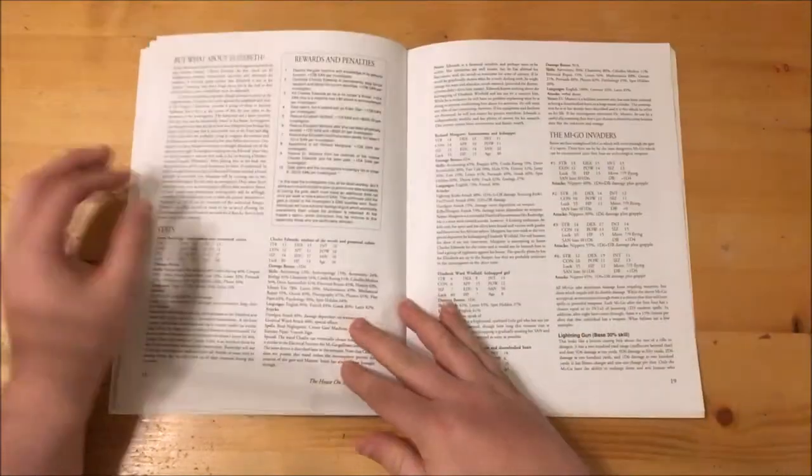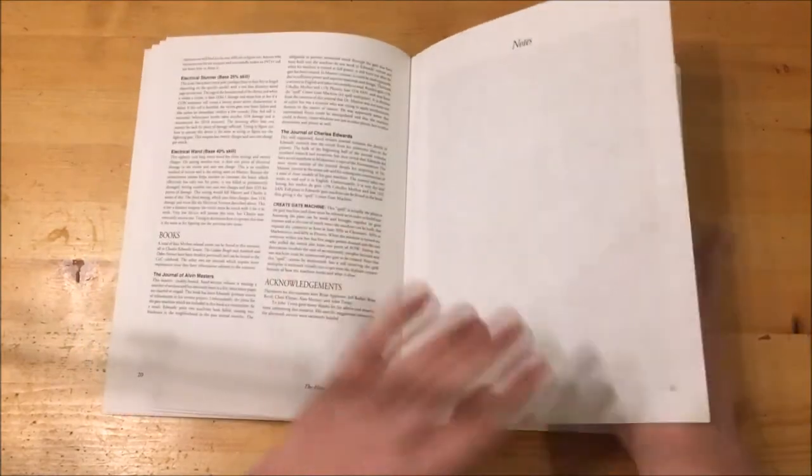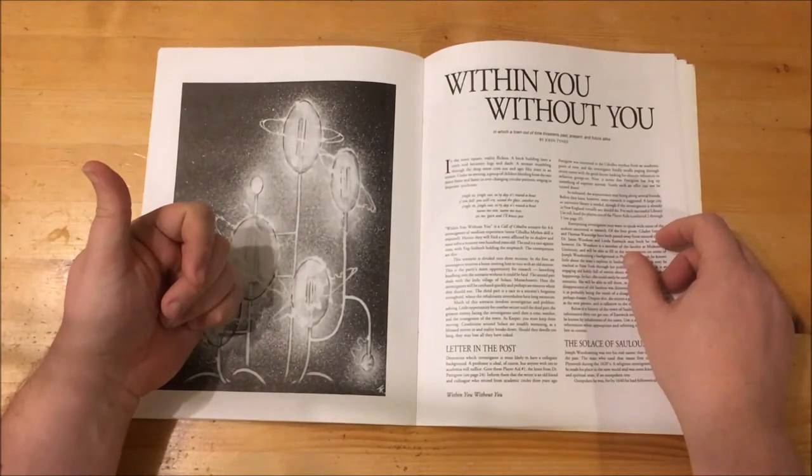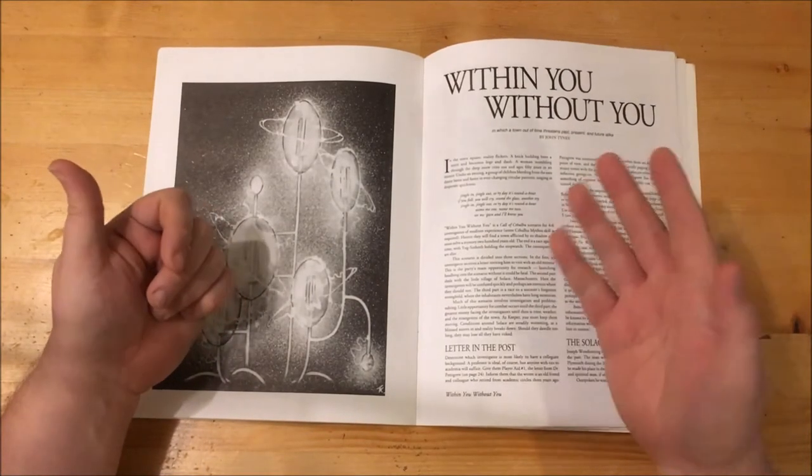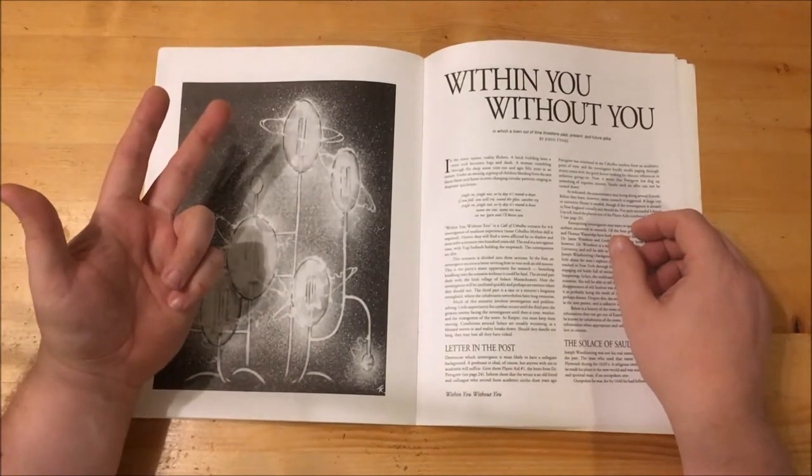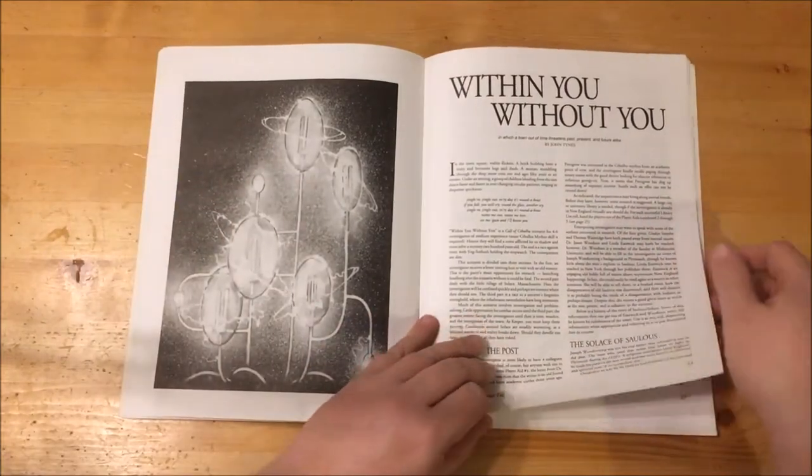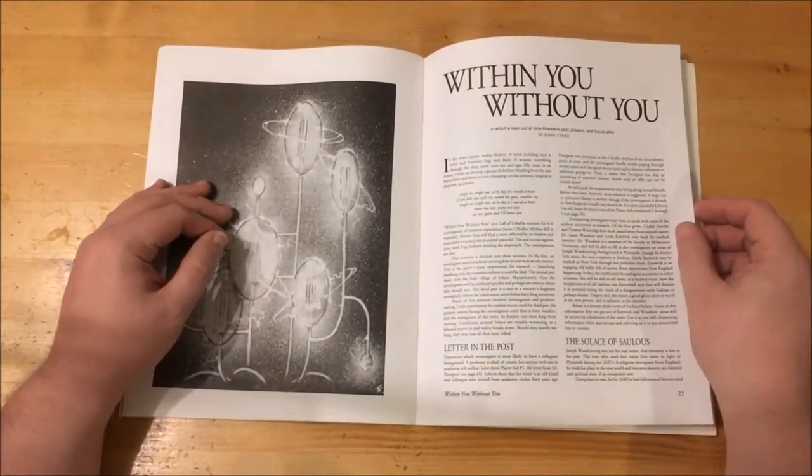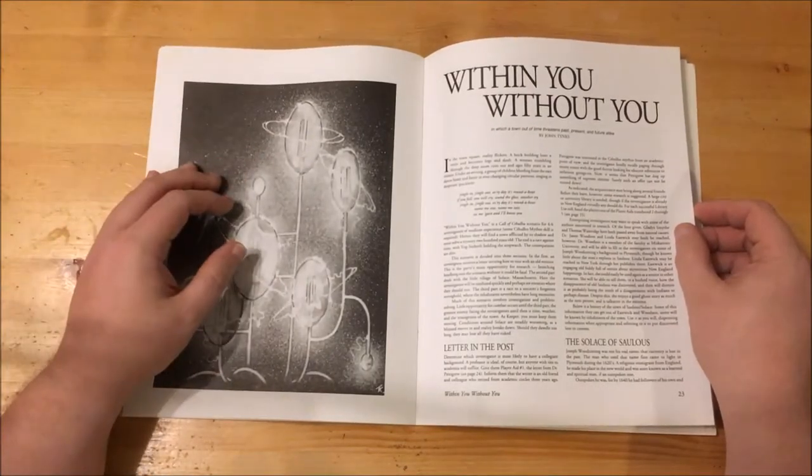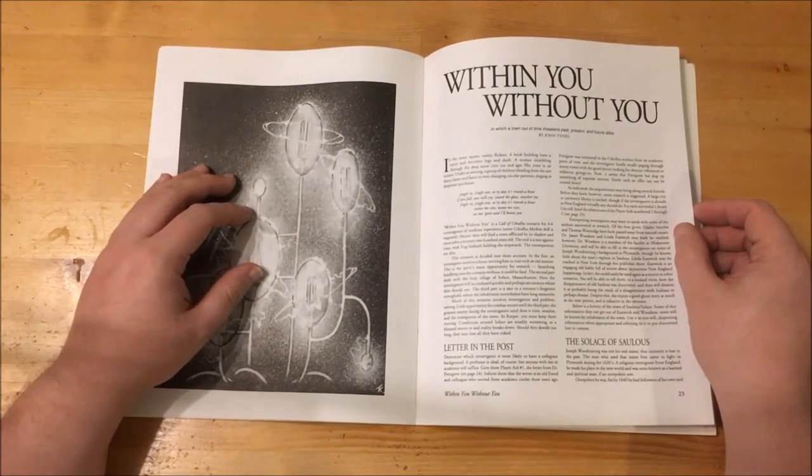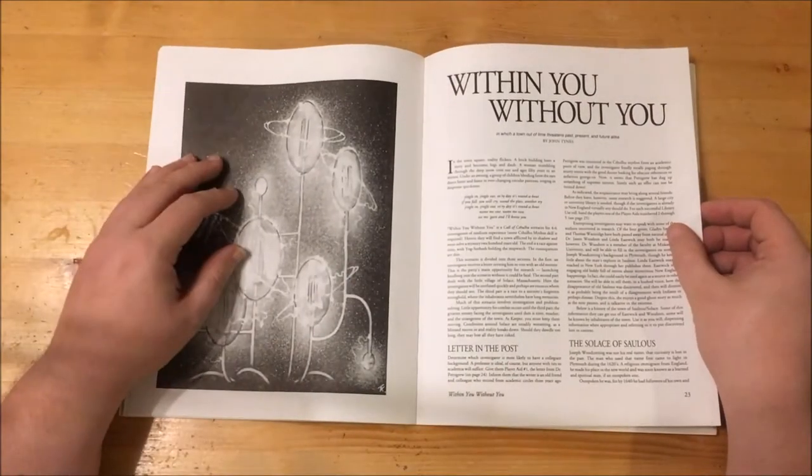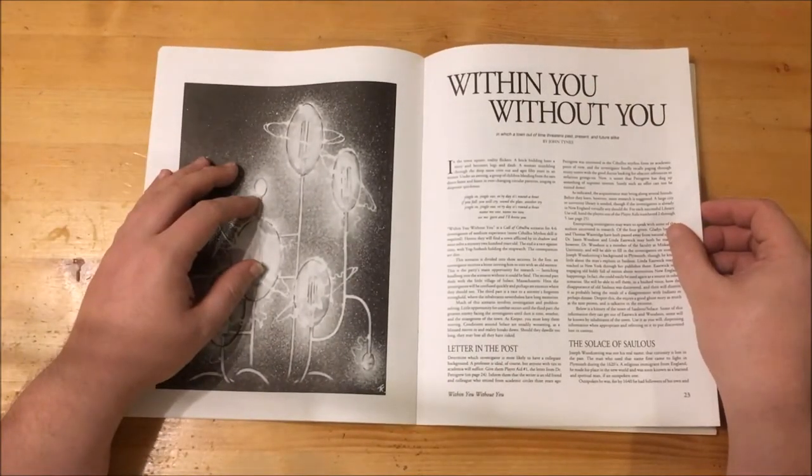The final scenario is called Within You Without You, and it is designed for four to six players of medium experience. The adventure is divided into three sections. Part one deals with one of the investigators receiving a letter from an old mentor, launching them into events. Part two deals with the village of Solace, Massachusetts, where they will be confused, and part three deals with a sorcerer's forgotten laboratory. The scenario is based around investigating and problem solving, with little combat happening until part three. It begins with the letter being received from a Dr. Pettigrew, an old friend and colleague who has dug up something of interest concerning the town of Solace.